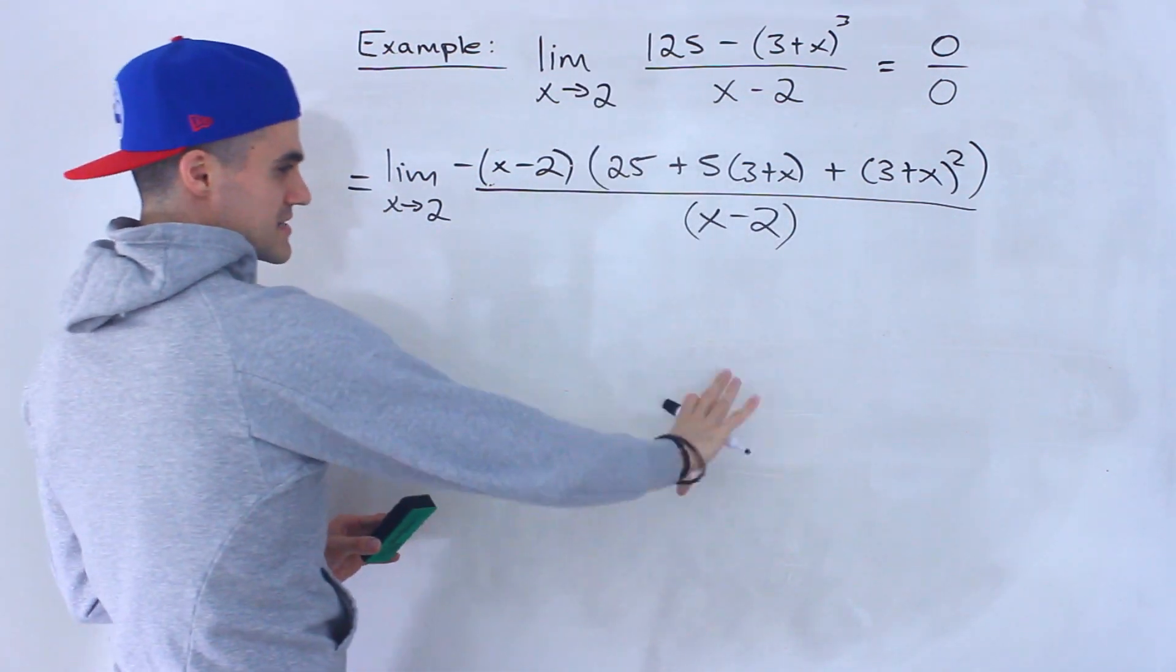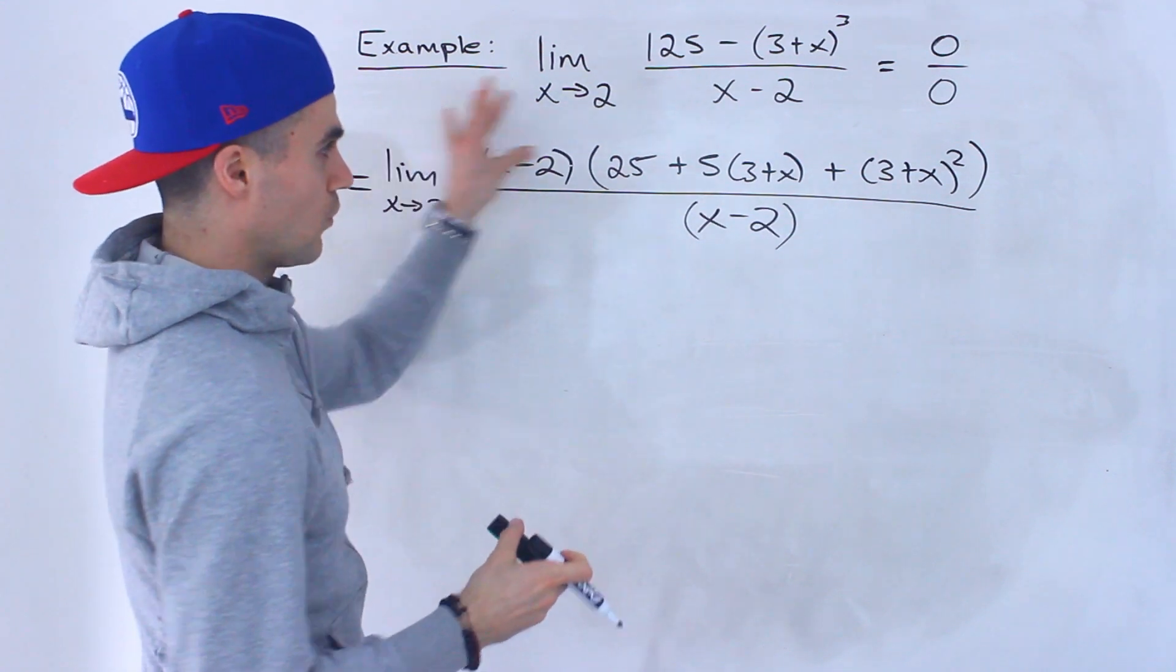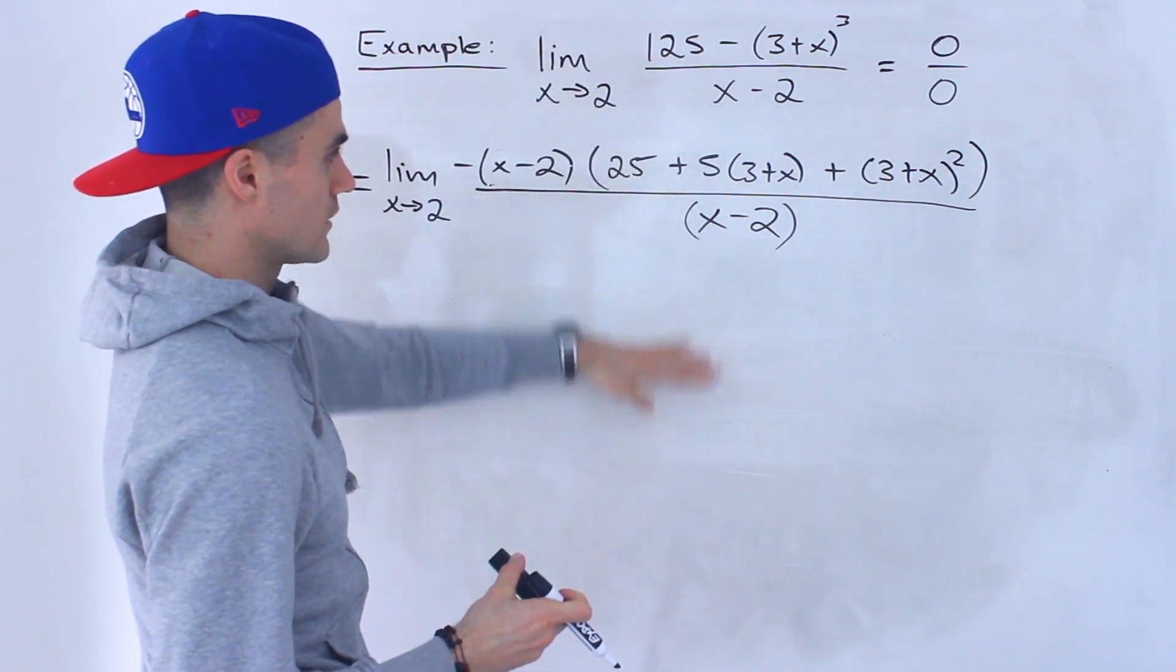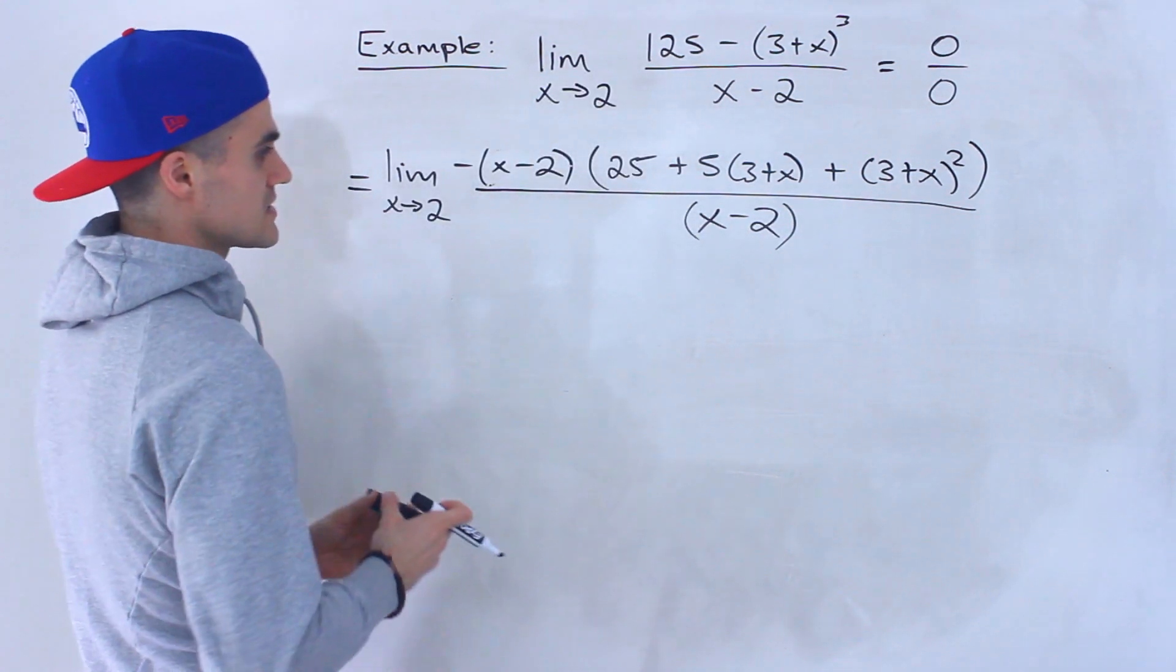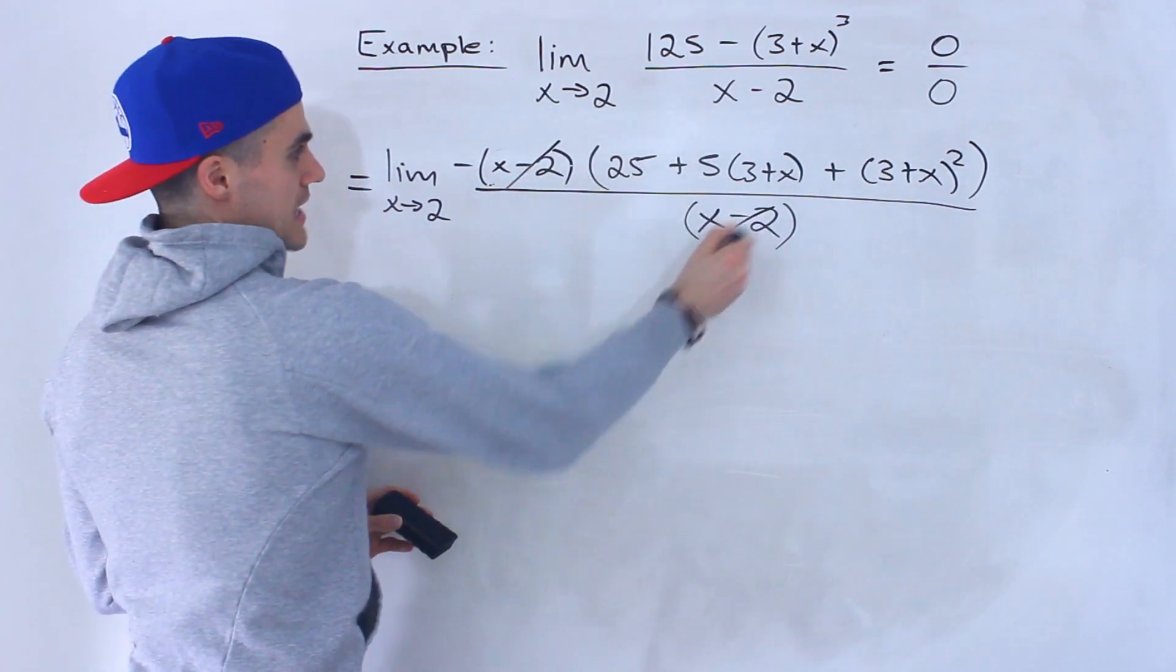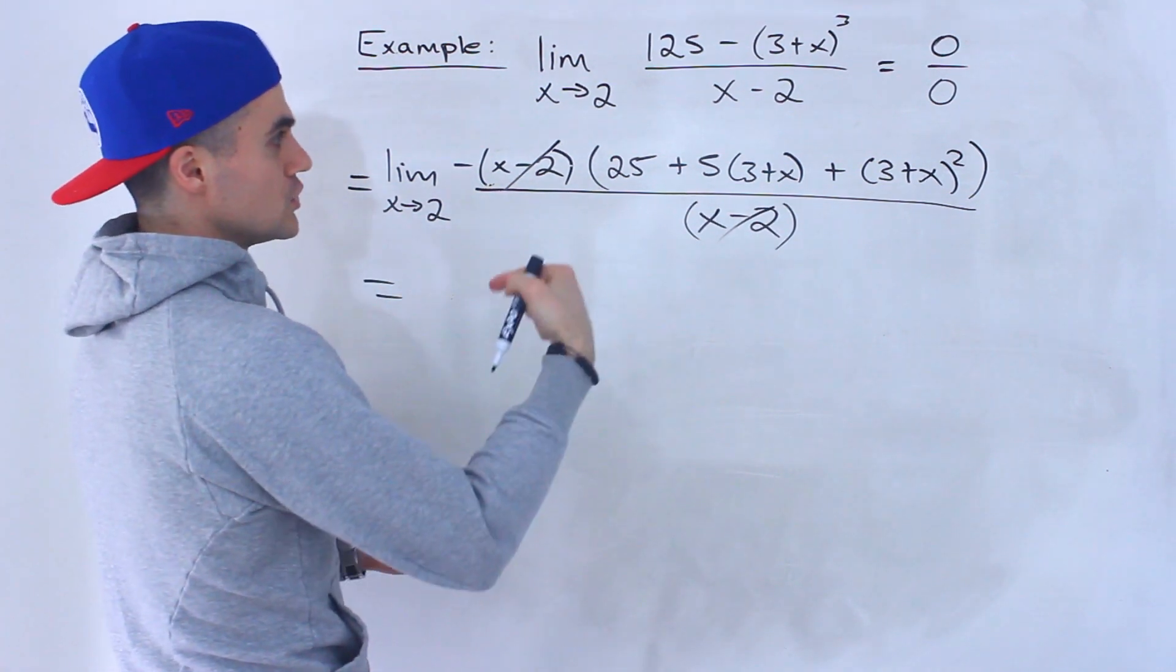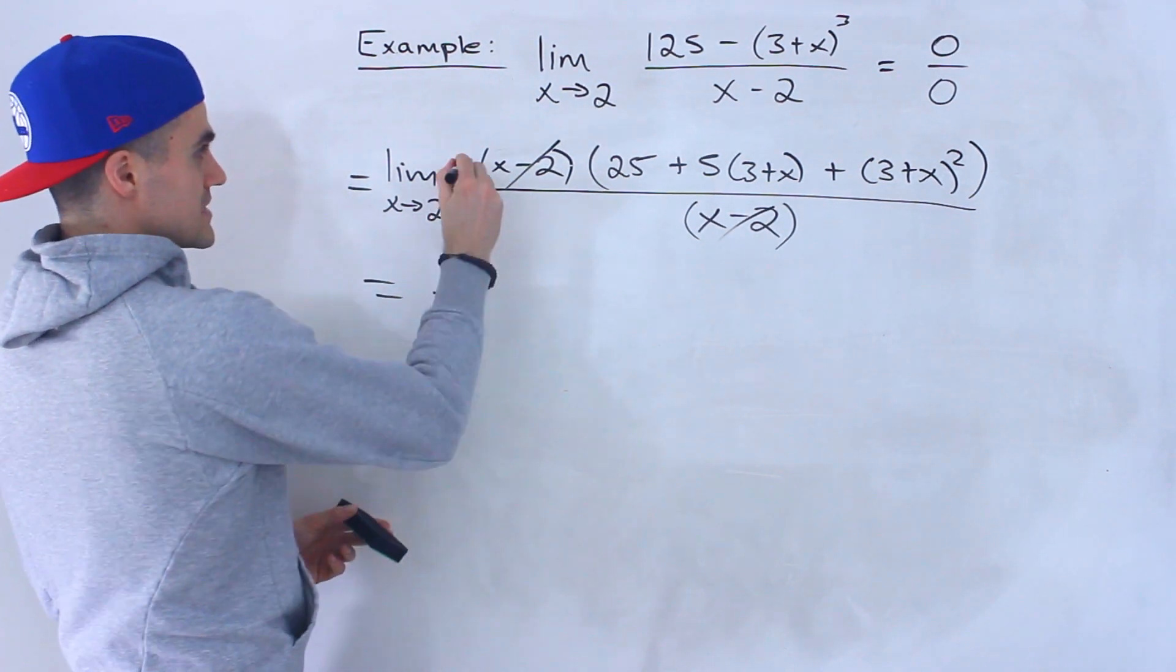All right, so I kind of skipped or I did a lot of steps on the side here, so you may want to write a couple of lines of what I just did if you want to keep writing the whole limit, just kind of saving room on the whiteboard here. But notice that now the x minus 2 is canceled out. And now we could plug in 2 for x, so we'd have this negative in front, it's like a negative 1,